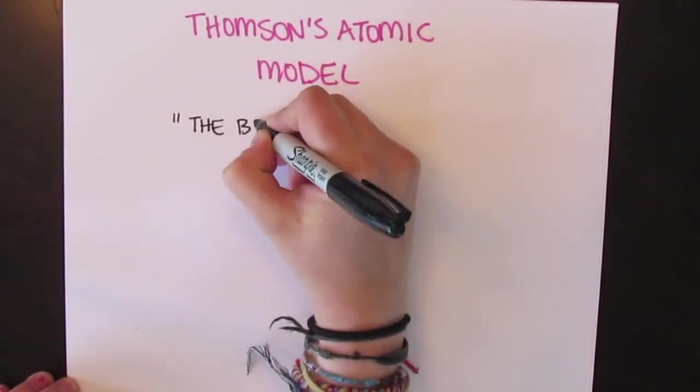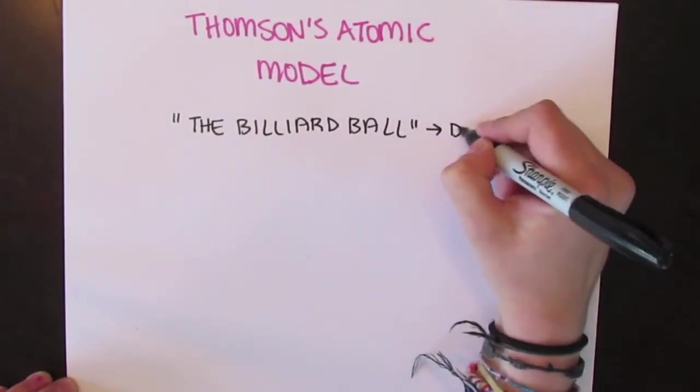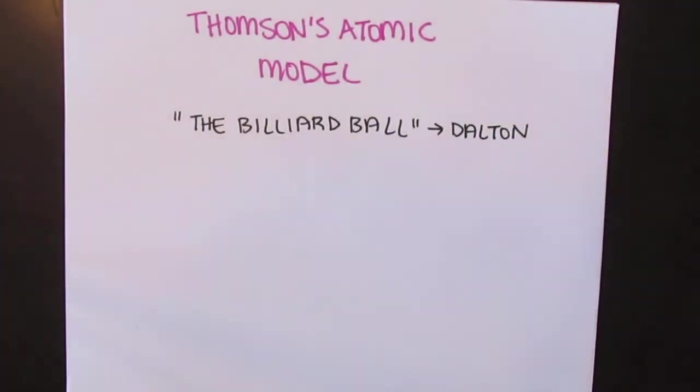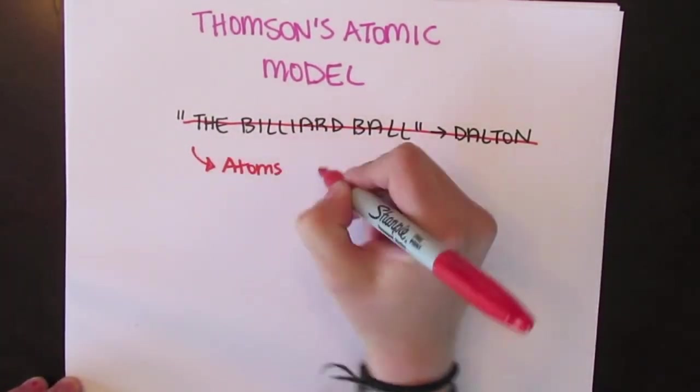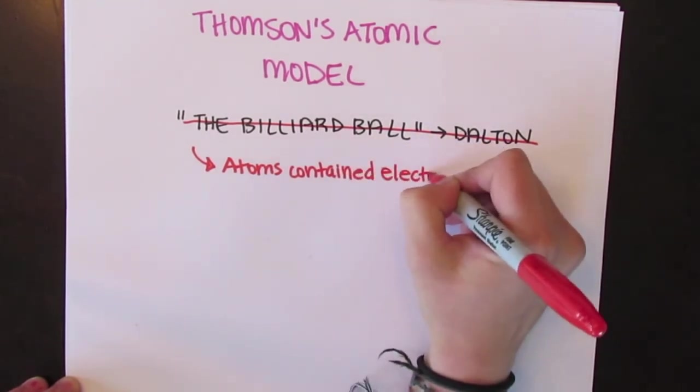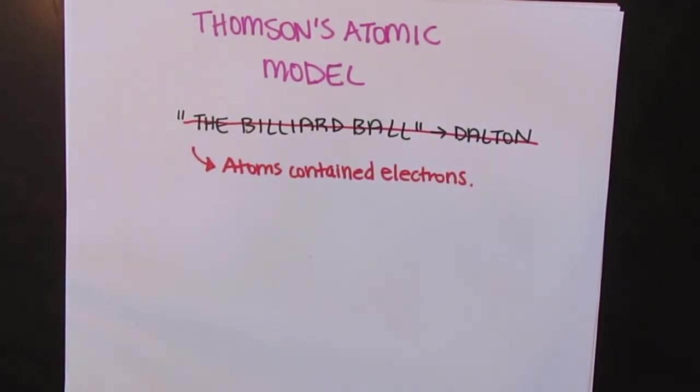From this, Thomson created his own atomic model, which was an improvement on Dalton's billiard ball model. His model included these negatively charged electrons, which he concluded must be the particles associated with the basic structure of matter, the atom.